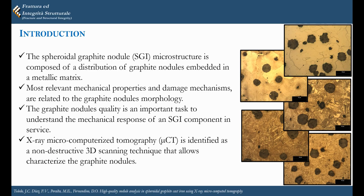As an introduction to this work, we can say that SGI microstructure is composed by graphite nodules embedded in a metallic matrix, which can be modified to obtain different grades of SGI by performing different heat treatments. Most relevant mechanical properties and damage mechanisms are related to the graphite nodule morphology, so the nodular quality is very important.